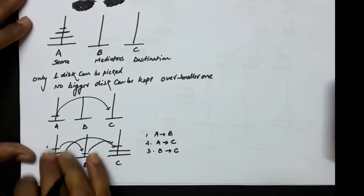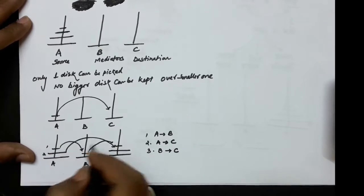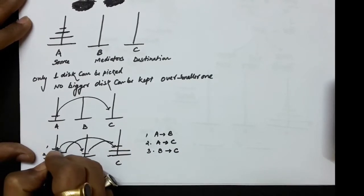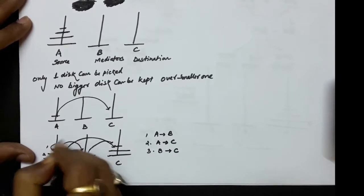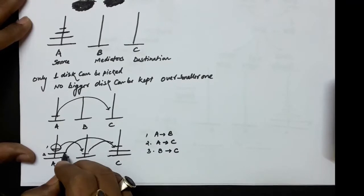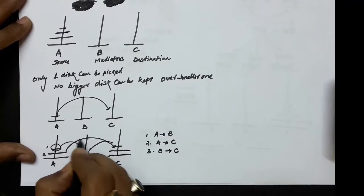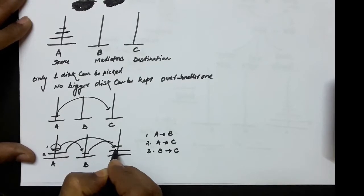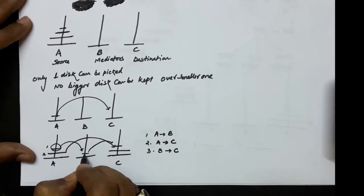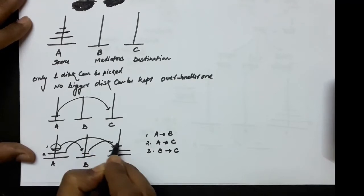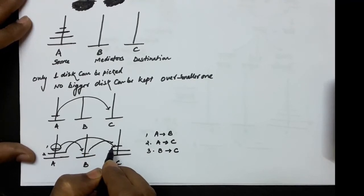You can also look at this as: one disk was transferred to the mediator, the leftover one disk was transferred to the destination, and the disk which was transferred to the mediator was transferred back to the destination.